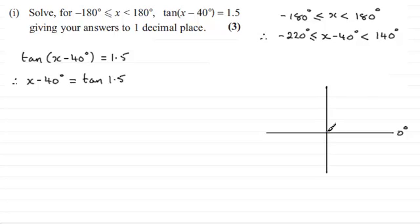So we draw two lines equally inclined to the horizontal line here, one there and one there, marking these two angles as being exactly the same size. So the angles that we require for x - 40° have got to lie in this range from -220° to 140°.